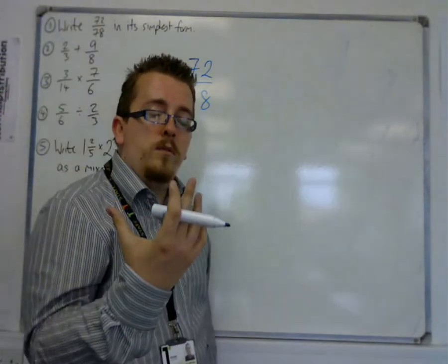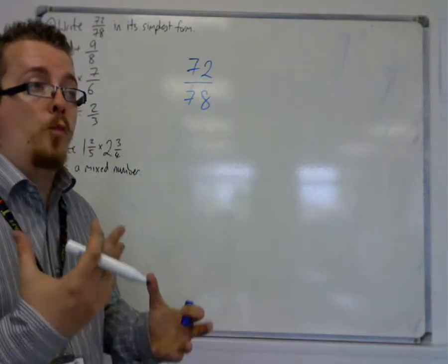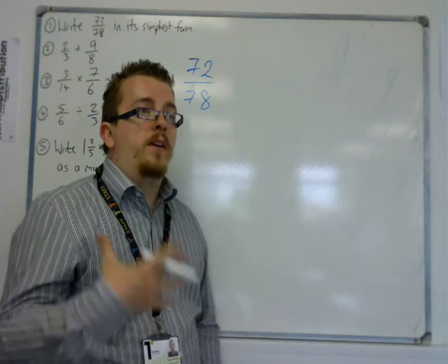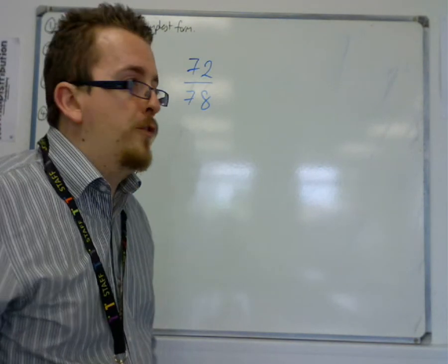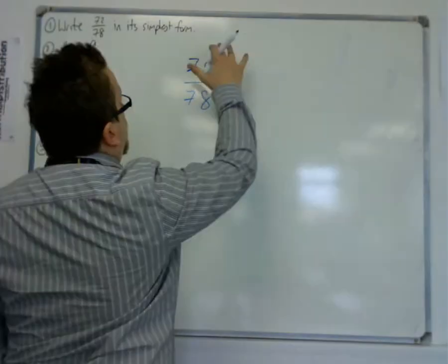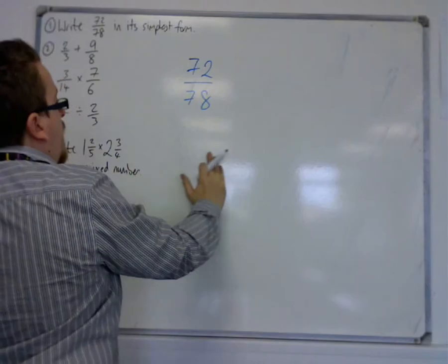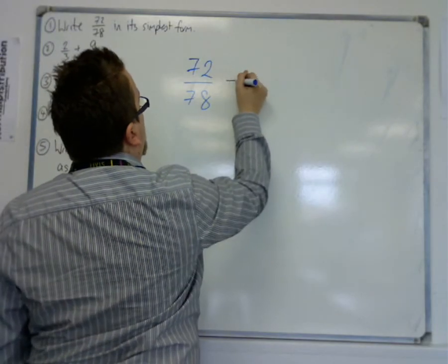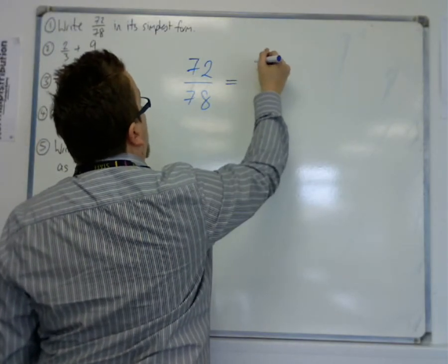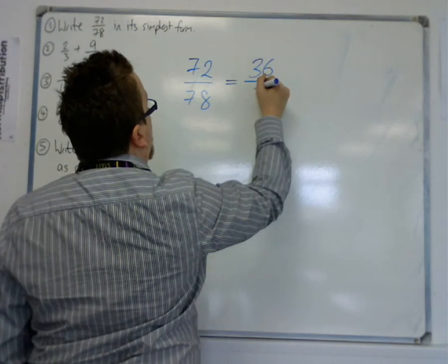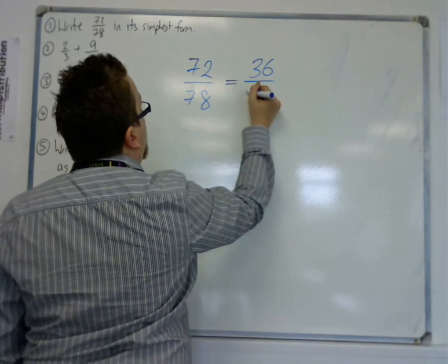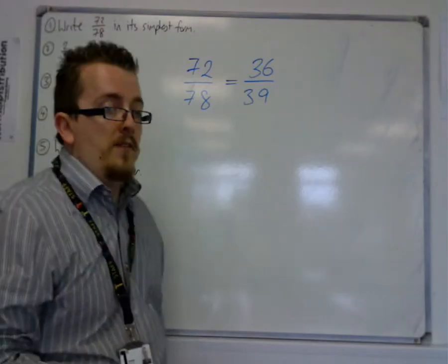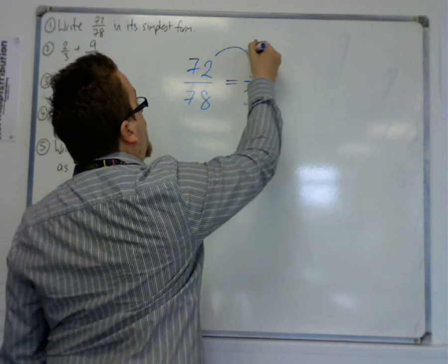Confidence in your times tables and algebra skills will go a long way to making the next two years of A-level maths much more comfortable for you. So first of all, 72 over 78. If you can't spot a larger factor, you can see that they're both even, so you can divide both of them by 2, and we can get 36 over 39. So that's dividing both top and bottom by 2.